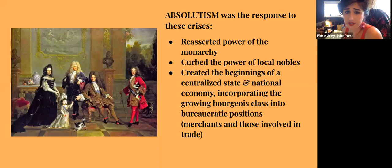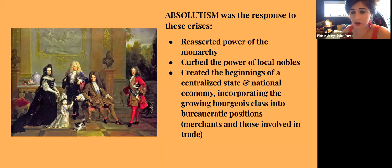Absolutism was the response to these crises. It reasserted the power of the monarchy, curbed the power of local lords, created the beginnings of a centralized state and a national economy, and incorporated the growing bourgeois class into bureaucratic positions — mostly merchants and those involved with trade. This is really the beginning of the bourgeois class.